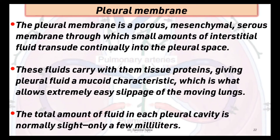Why do we not see pleural effusion as commonly? To understand pleural effusion, we must first know about the pleural membrane, which is a porous mesenchymal serous membrane through which small amounts of interstitial fluid transude continually into the pleural space. These fluids carry tissue proteins, giving pleural fluid a mucoid characteristic which allows extremely easy slippage of the moving lungs. The total amount of fluid in each pleural cavity is normally only a few milliliters.